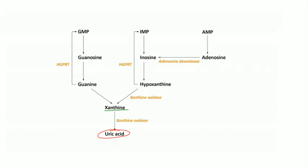The enzyme xanthine oxidase converts xanthine to uric acid. In rheumatology, allopurinol and febuxostat inhibit xanthine oxidase to block uric acid production in gout. Allopurinol also affects the immunosuppressant azathioprine and its anti-cancer cousin 6-mercaptopurine — both are metabolized by xanthine oxidase, so patients on allopurinol are at risk of increased toxicity from these drugs.